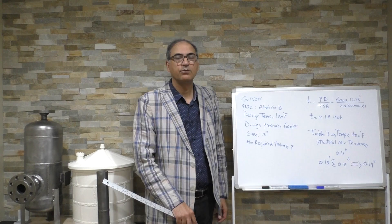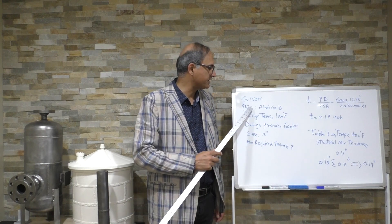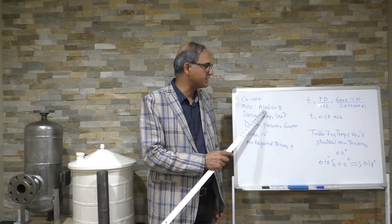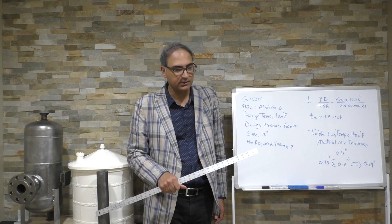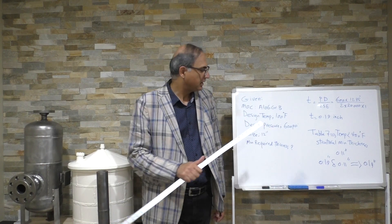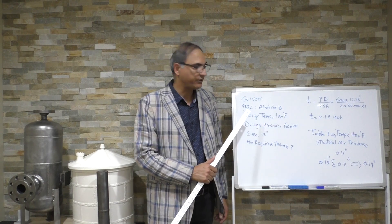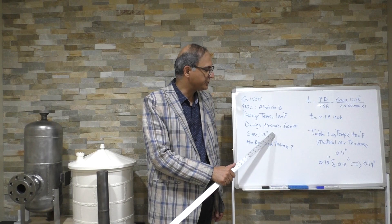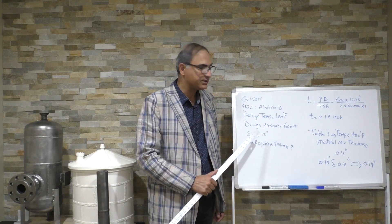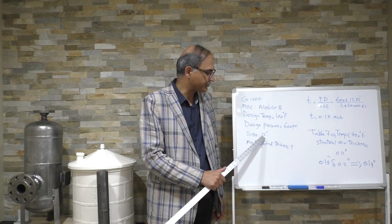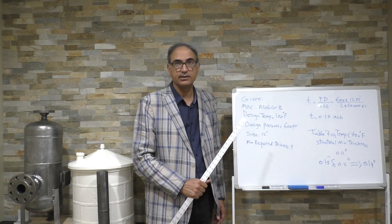We are going to review an example. The material of construction is ASTM A106 Grade B. Our design temperature is 100°F, our design pressure is 600 psi, the pipe size is 12 inch. What is the minimum required thickness?